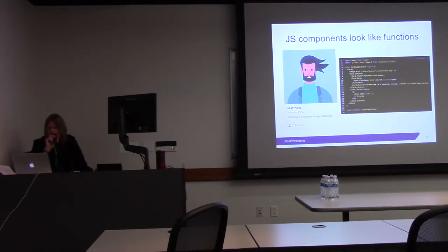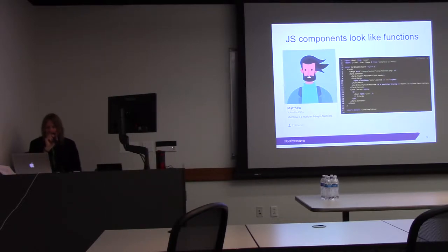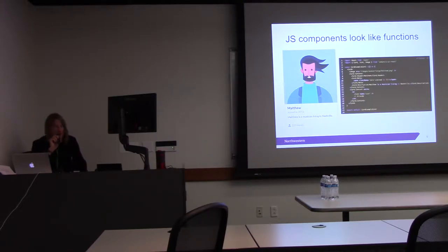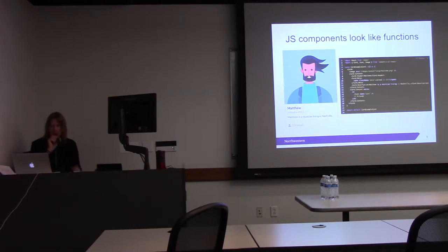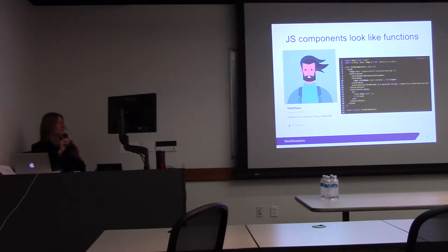Components look like functions because, at the core, they are functions. They take input and return output in a consistent and reliable manner. Say we have a component called card — an example card. It shows Matthew, his image, some cool hair, and some metadata about Matthew. The component is just an ES6 JavaScript function, but it returns an image, nicely formatted text, and some HTML markup. UI components are a blending of functionality and presentation — they basically combine HTML and JavaScript and return a UI component.